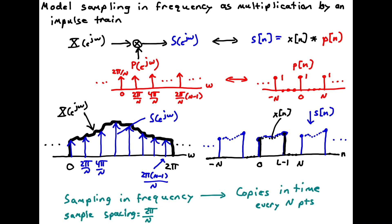If we multiply our arbitrary spectrum x of e^{jω}, the black line here, by this impulse train, then each of those impulses picks out the value of x of e^{jω} at the location of the impulse. There are N impulses between 0 and 2π with this spacing.